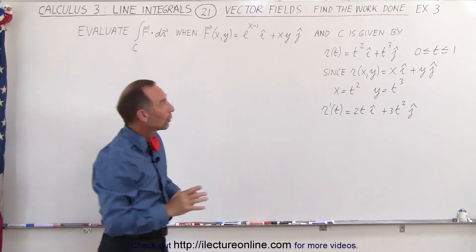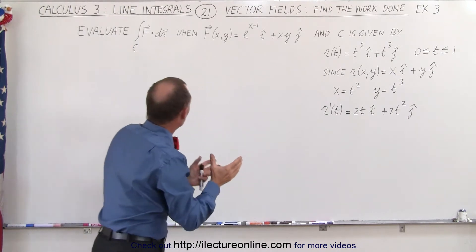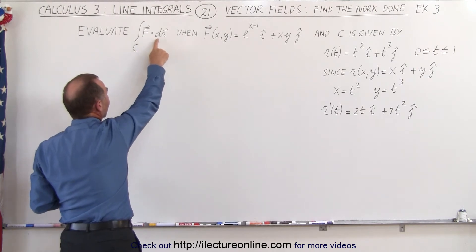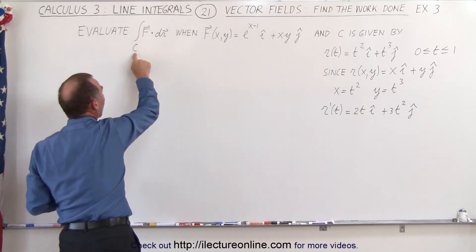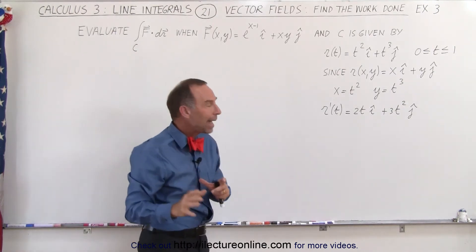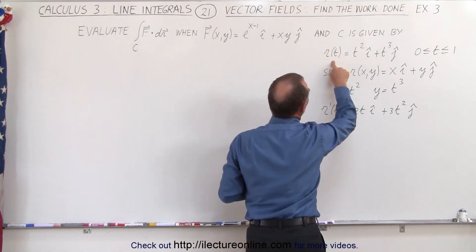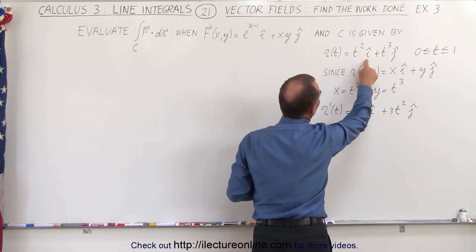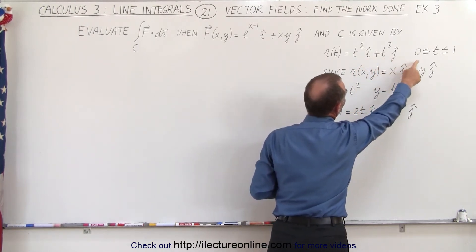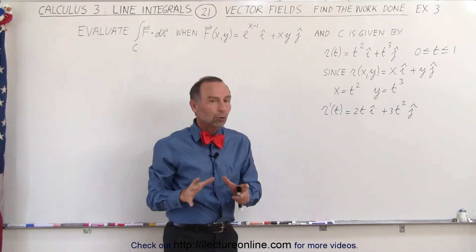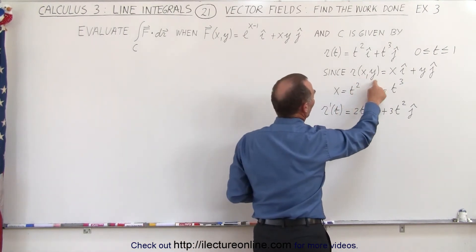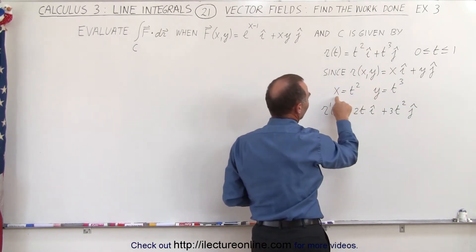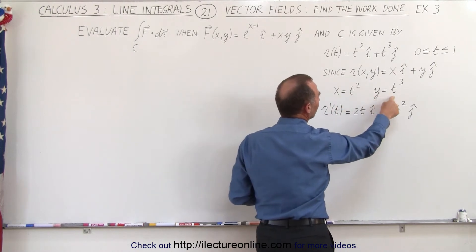The curve along which we're going to integrate — because what we're trying to find here is the work done, which is the vector field multiplied by the derivative of the position vector, integrated over the path taken. The path is defined using parametric variable t, where the position in terms of t equals t squared in the i direction plus t cubed in the j direction, with t varying between 0 and 1. Comparing with the standard position vector x·i + y·j, we see that x equals t squared and y equals t cubed.